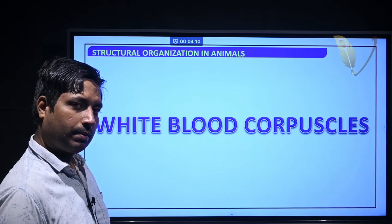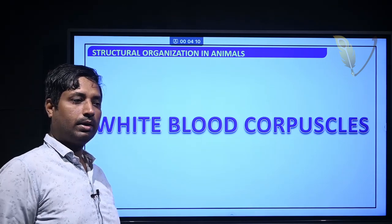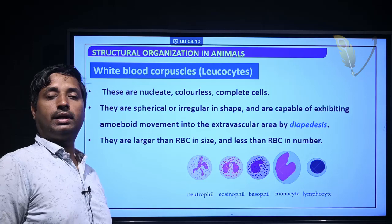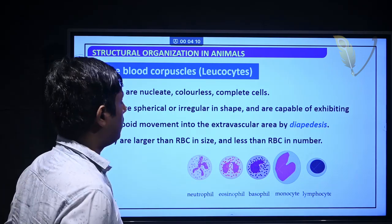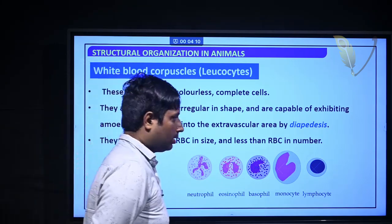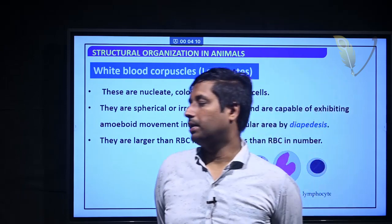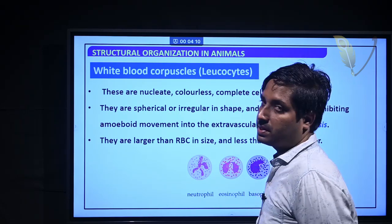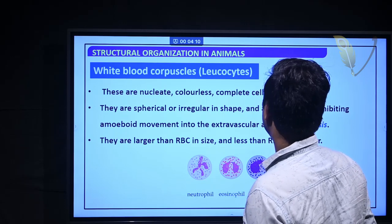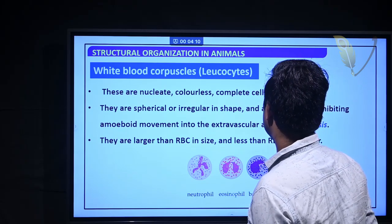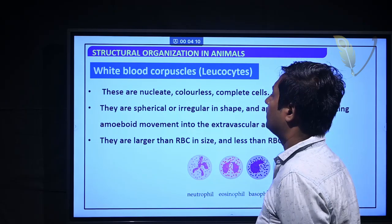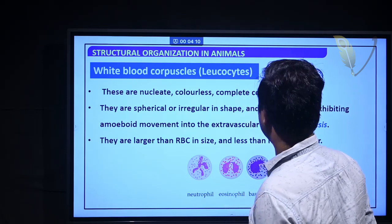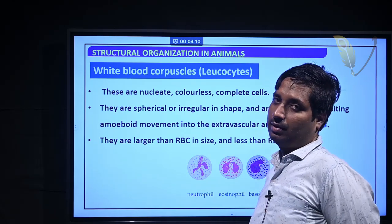White blood corpuscles, also called WBCs, are nucleated and colorless because they lack pigmentation. They are spherical or irregular in shape and are capable of exhibiting amoeboid movement into the extravascular area by the process called diapedesis.